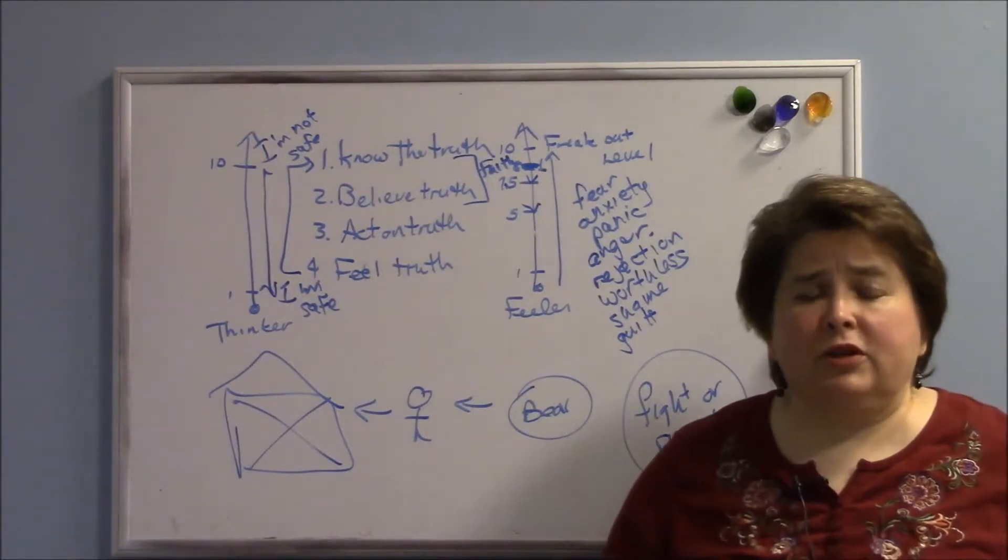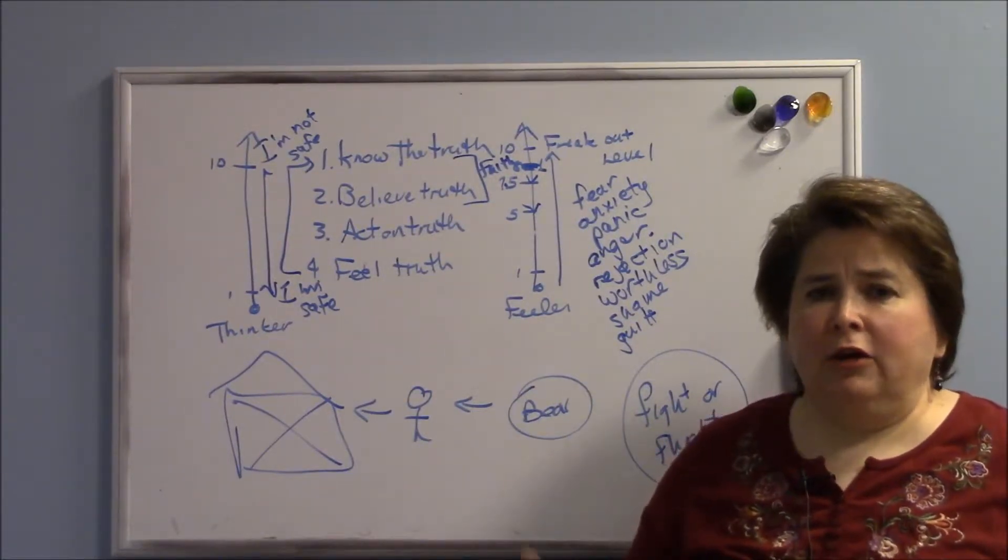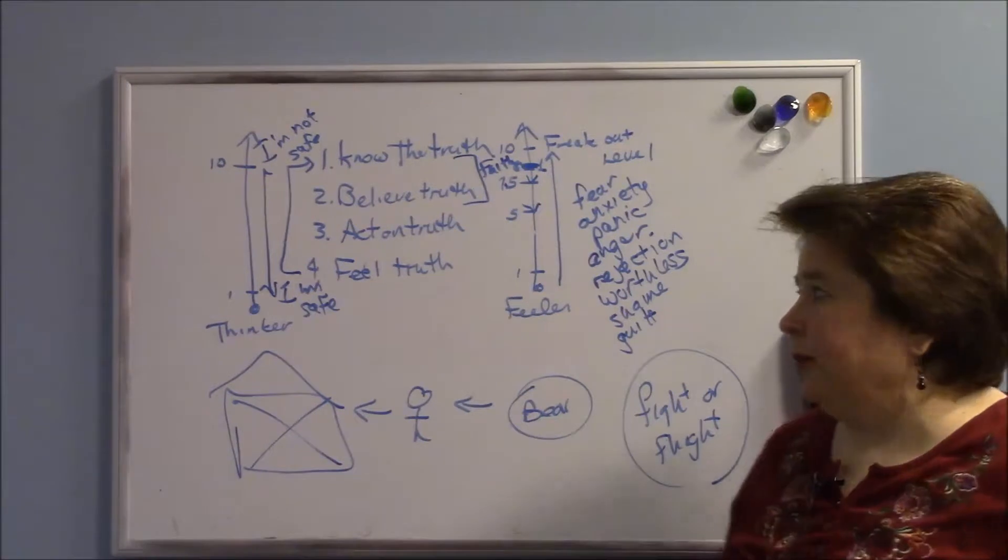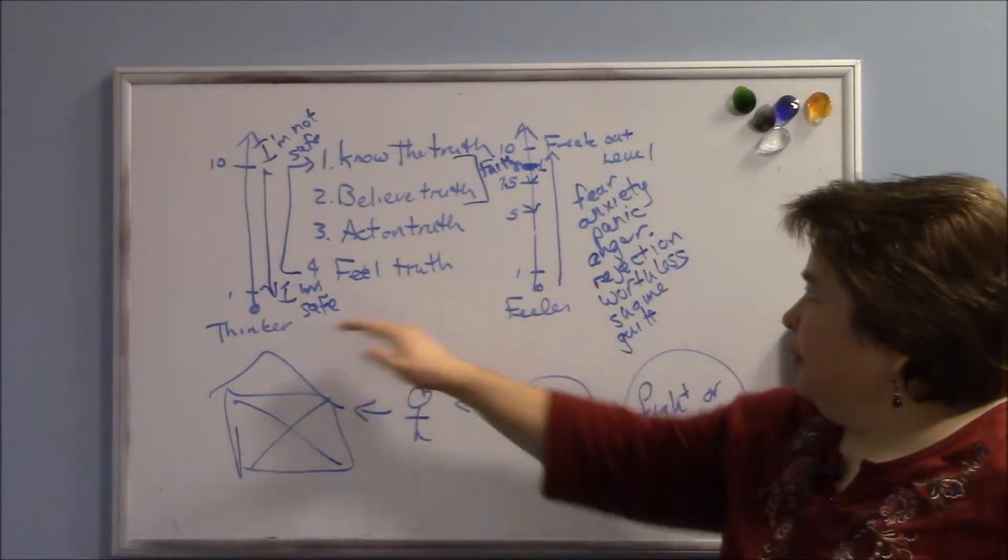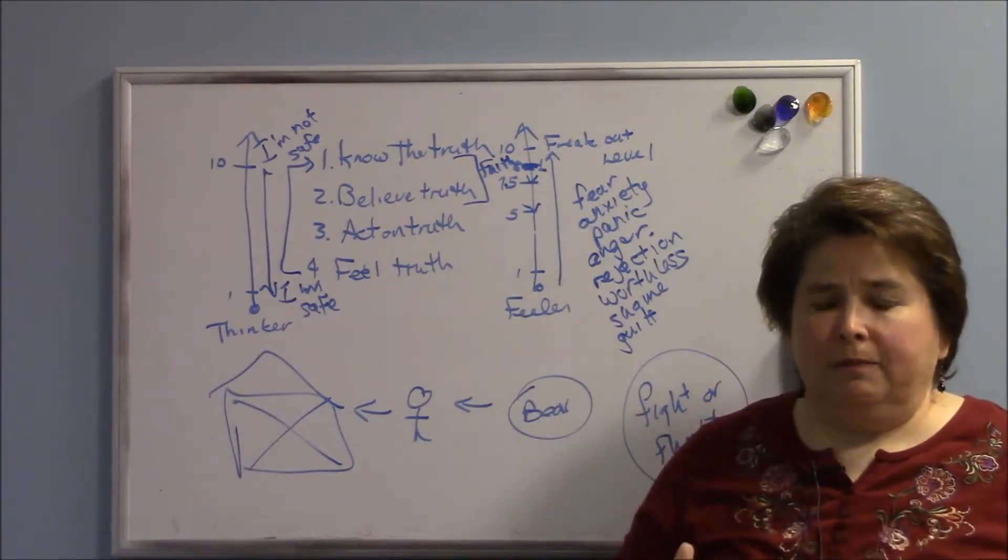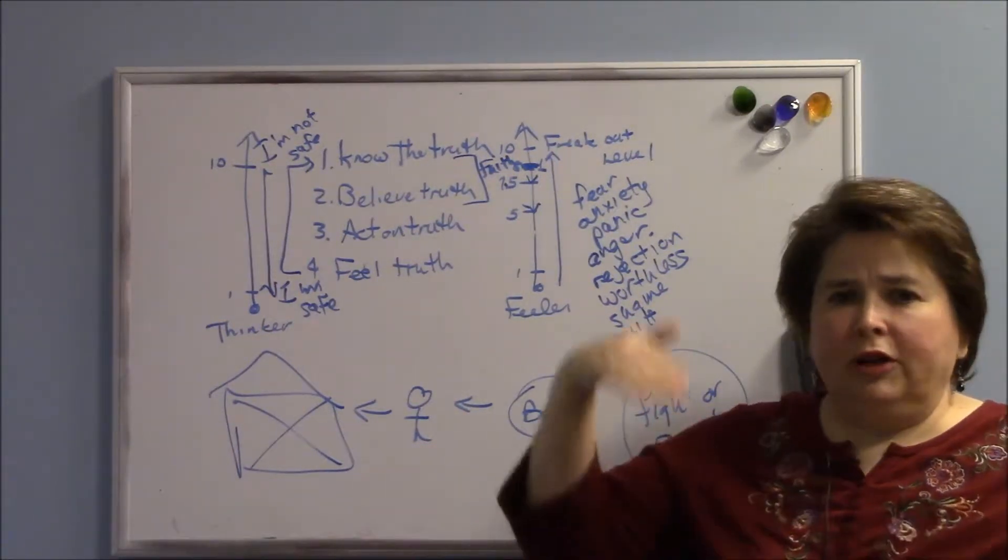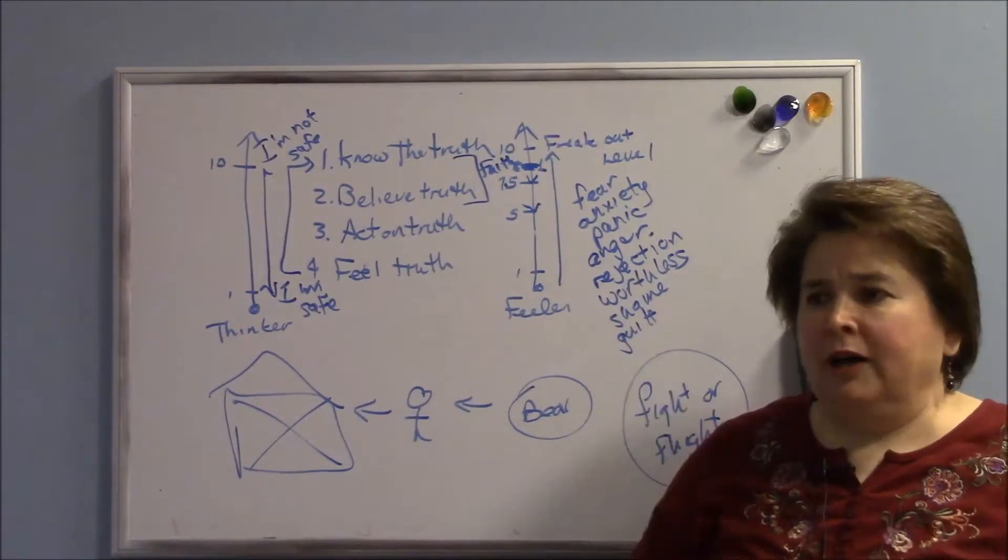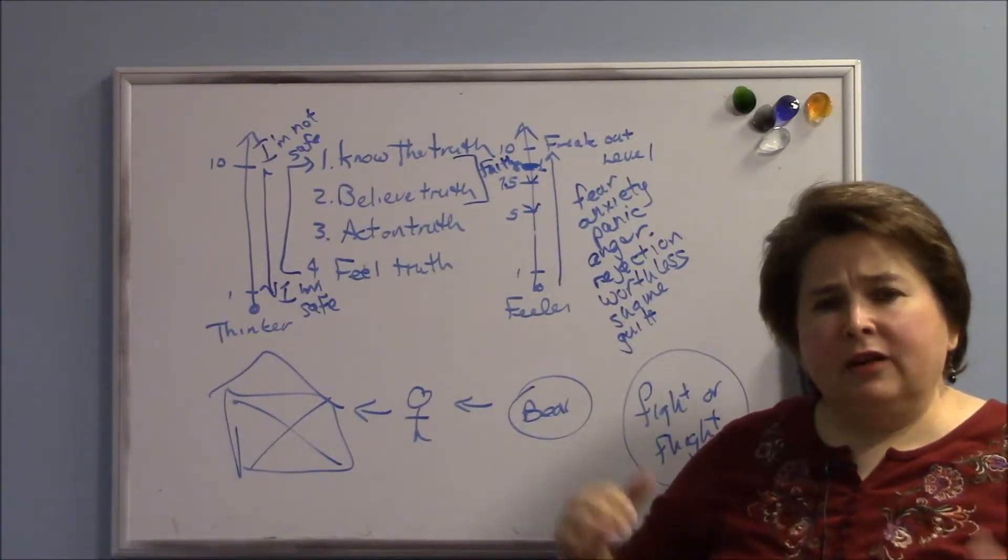So it's a simple illustration to help us understand how our thoughts and emotions work together. We have the thinker and we have the feeler. Both of them go up from one to ten very quickly. They shoot on up there depending on where we're setting our mind, but they come down at a much different pace.